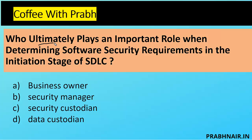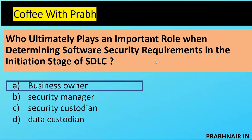Quick question: who ultimately plays an important role when determining software security requirements in the initiation stage of SDLC? Data custodian and security custodian are removed — they are the ones who manage, not determine. We are left with security manager and business owner. The keyword is 'ultimately.' Security manager will review, but ultimately the business owner is the one who approves. So the answer is A for Alpha — business owner. If the question asks who considers or defines, the answer would be security manager or CISO, but who ultimately approves the security requirement is the business owner.